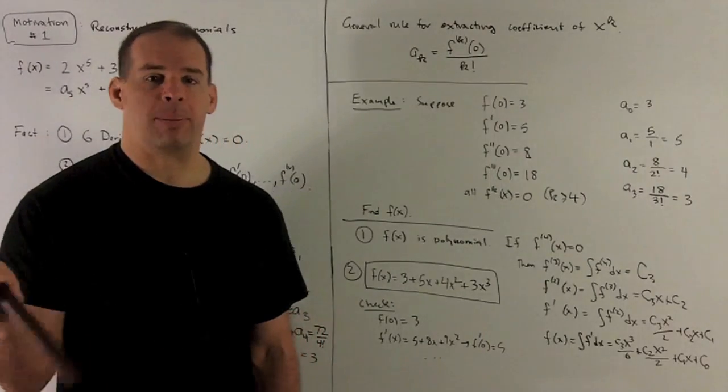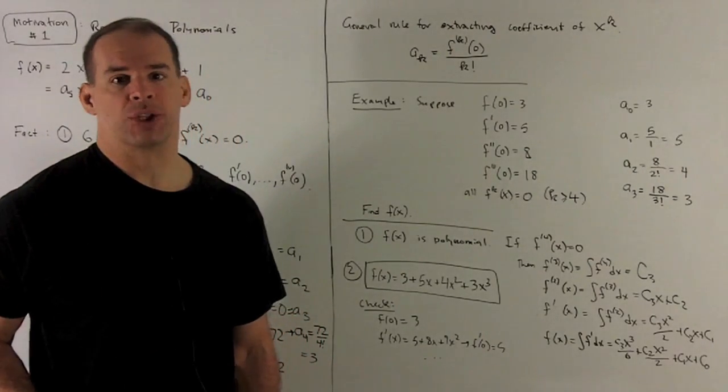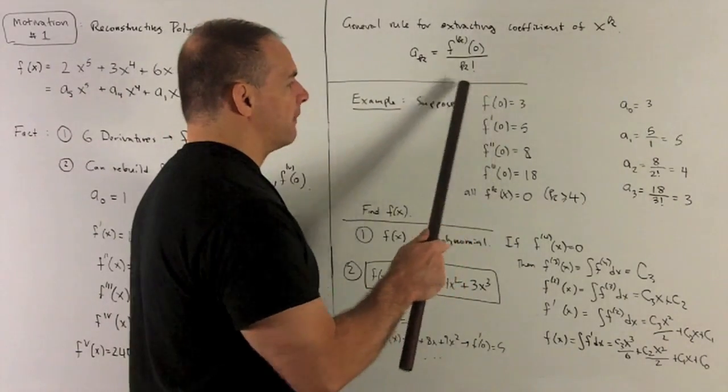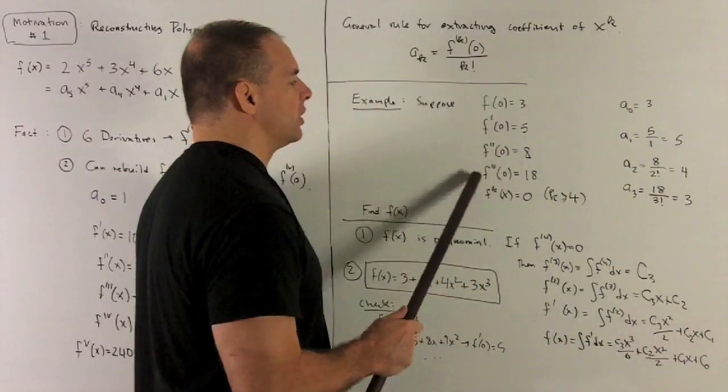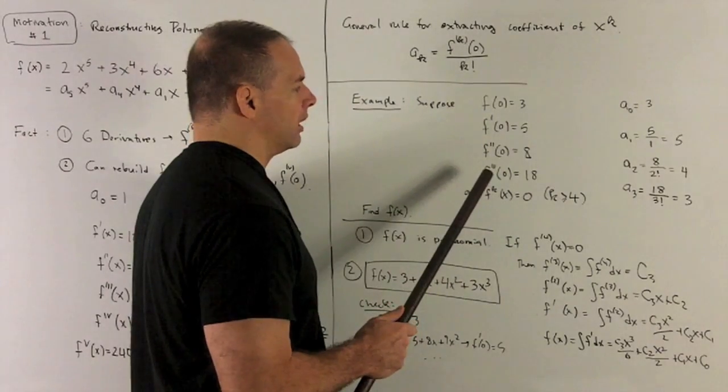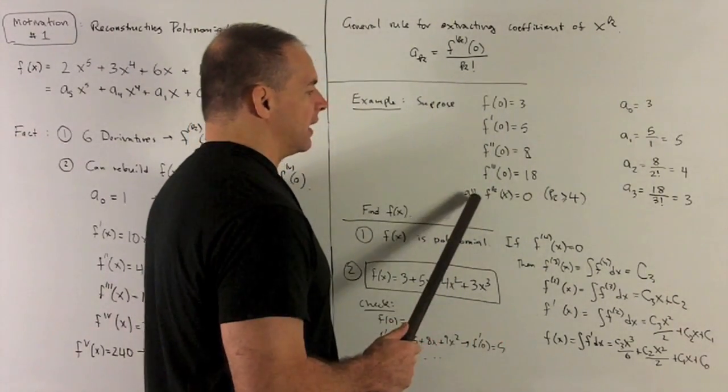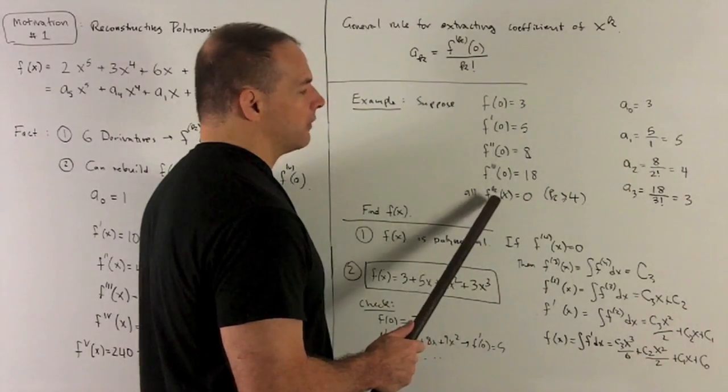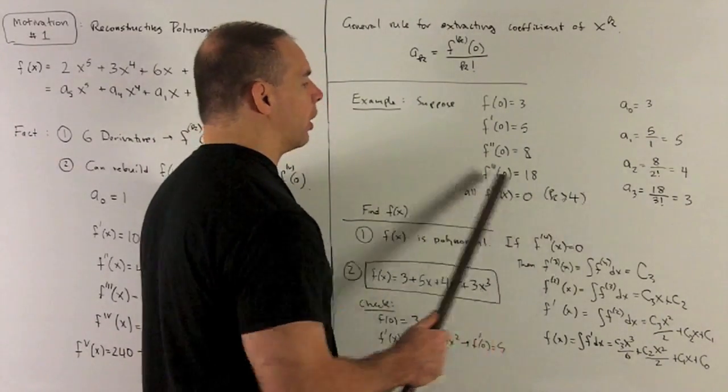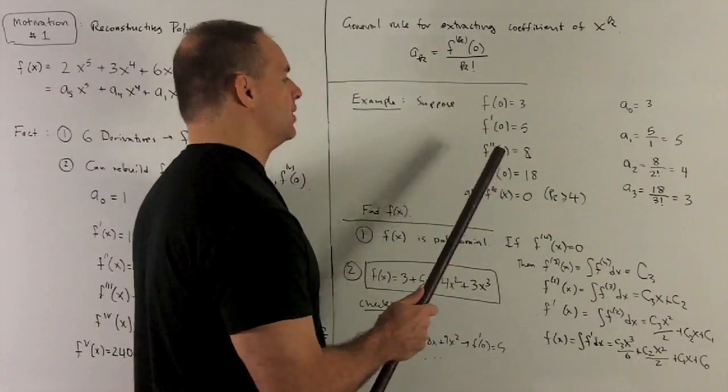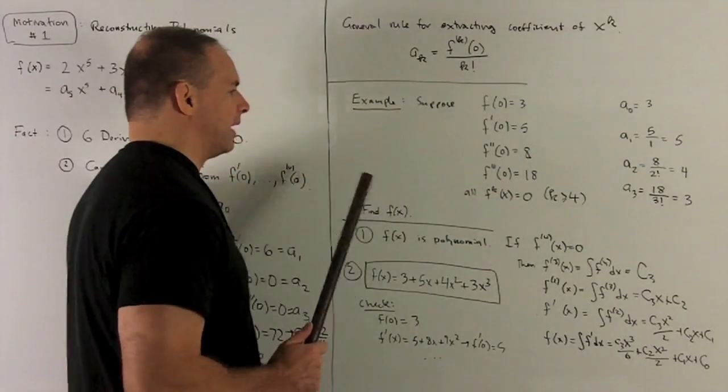Let's take a look at an example where we rebuild a polynomial from scratch. What we'll be given is, I'm going to have my function evaluated at 0, and the first three derivatives evaluated at 0 also. We're also going to be told that if I take any derivatives, fourth derivative or higher, we're just getting 0. Nothing's going to come out of that, and that's going to be for all points, not just the point 0. I want to find f(x).